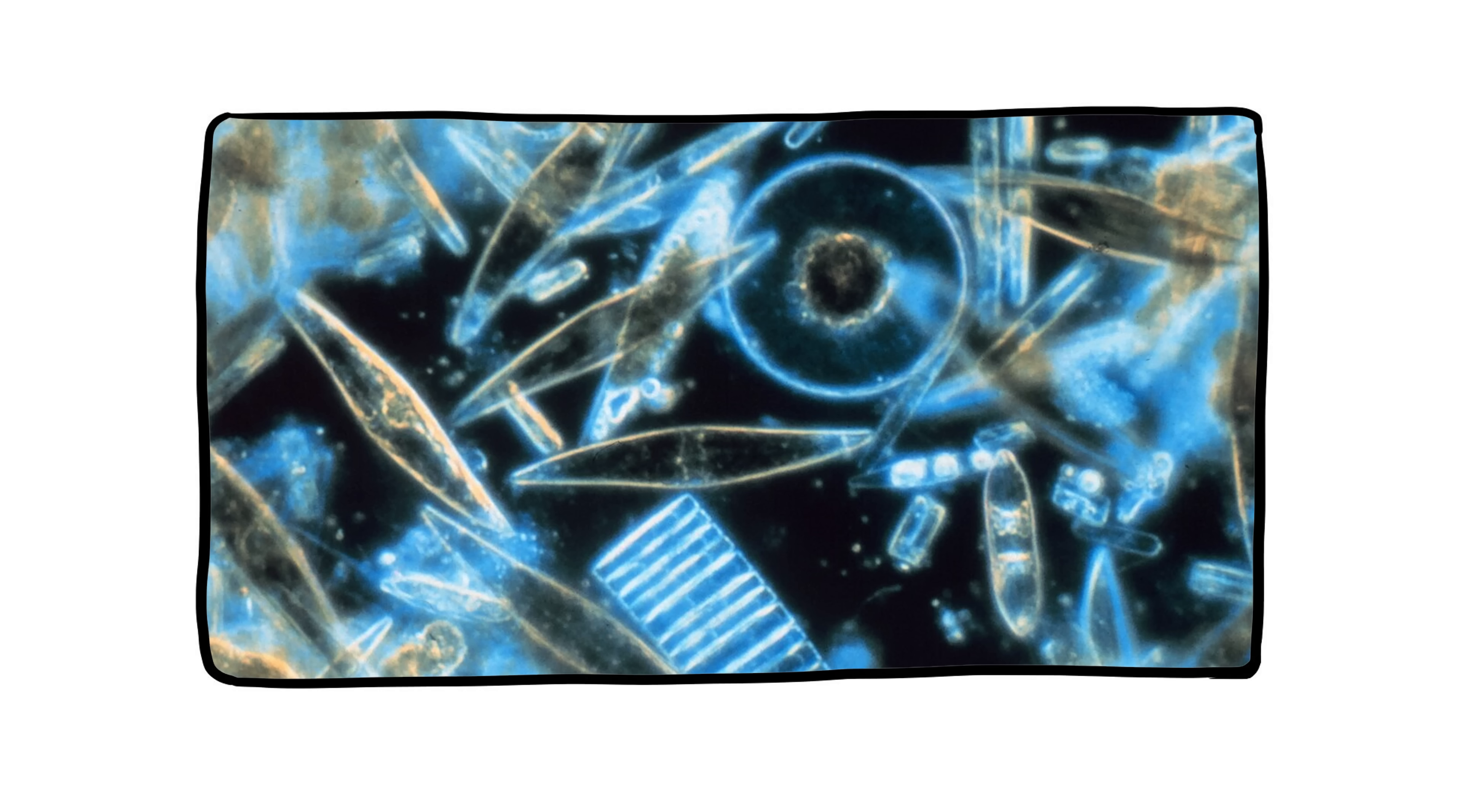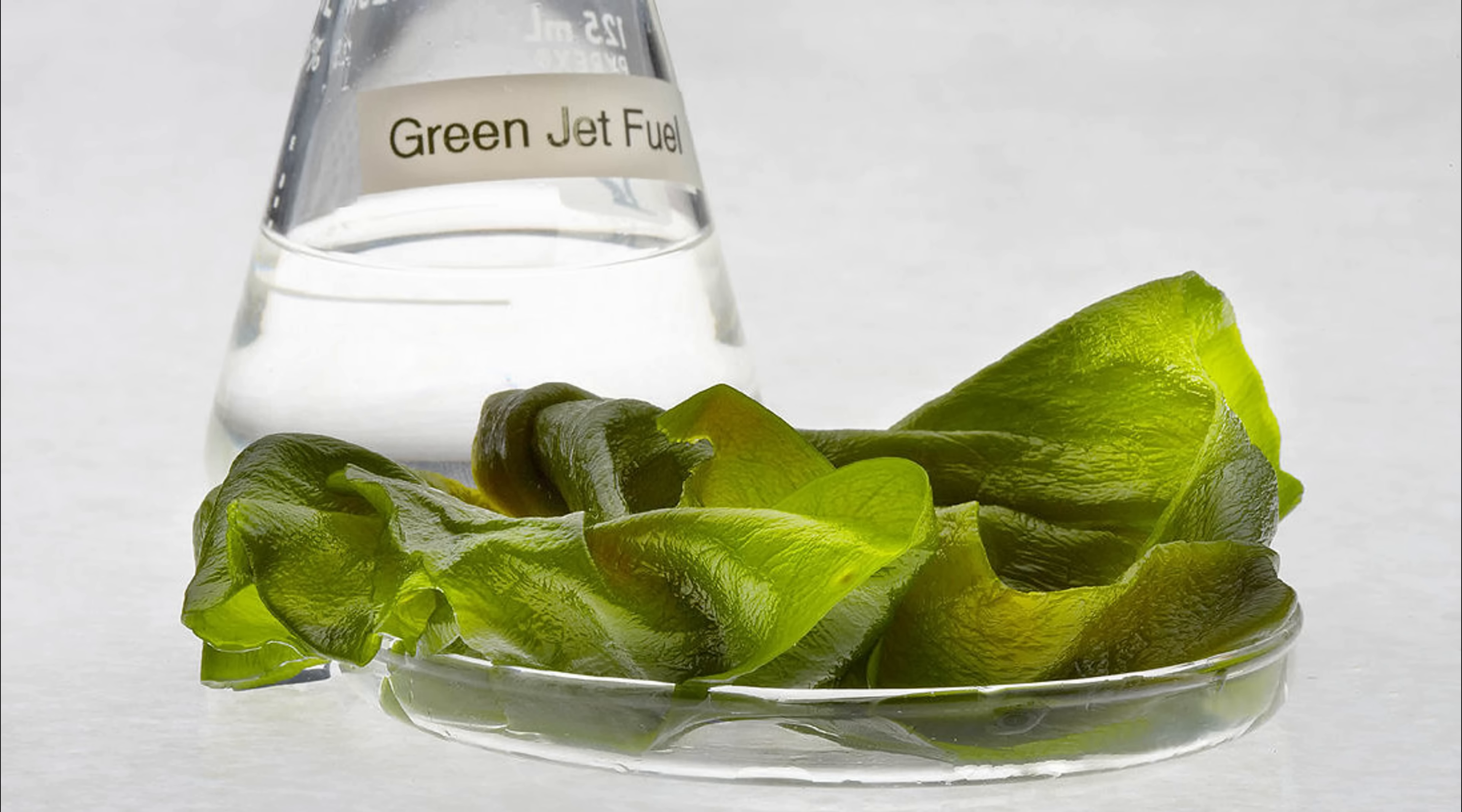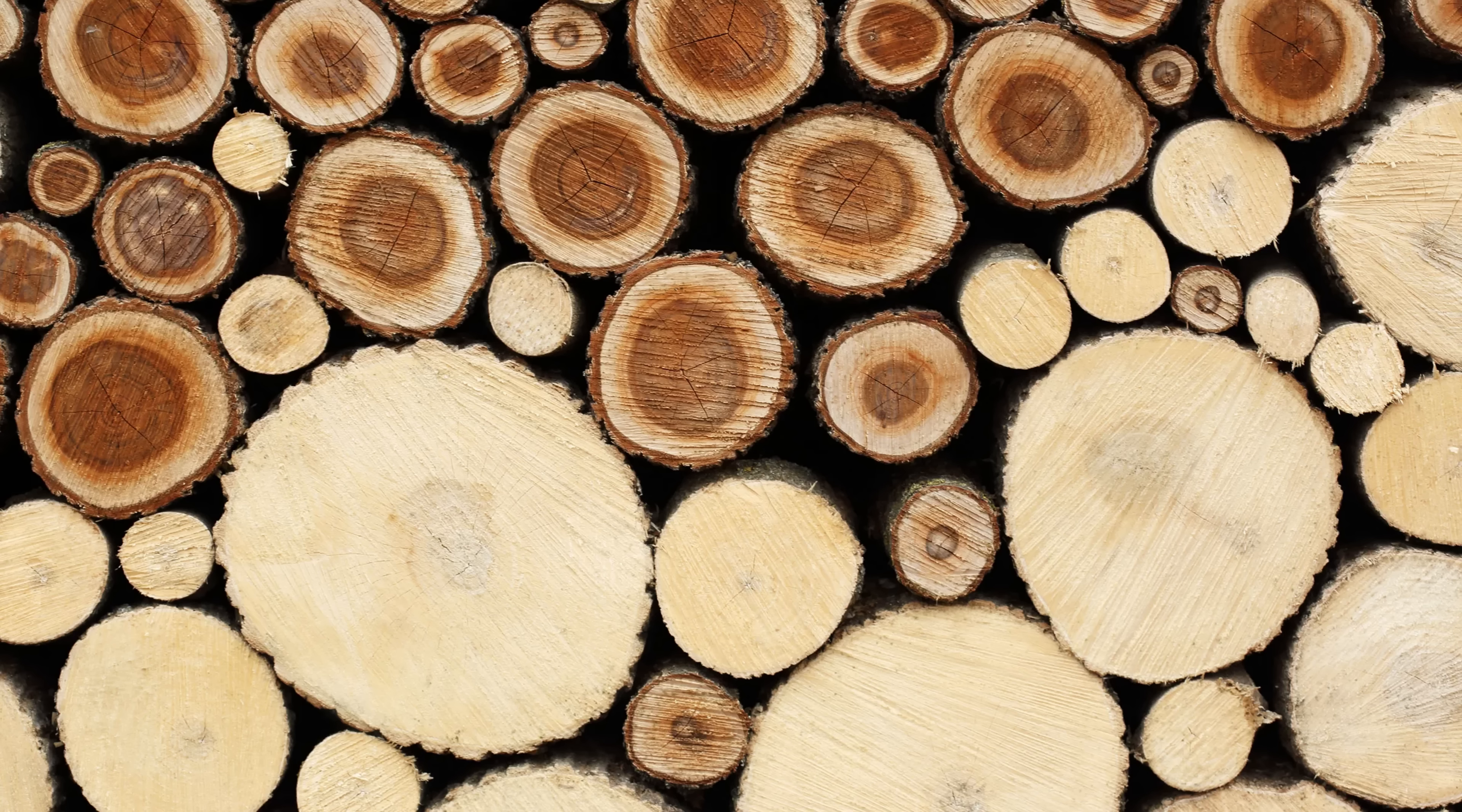Also worth noting, the type of organic matter determines what gets cooked. Algae and plankton usually make oil and gas. Plants and woody material make coal.